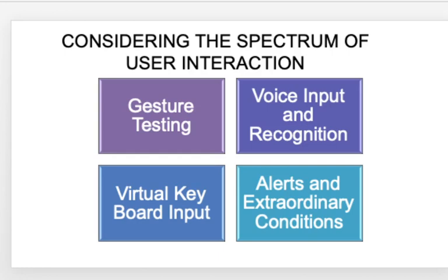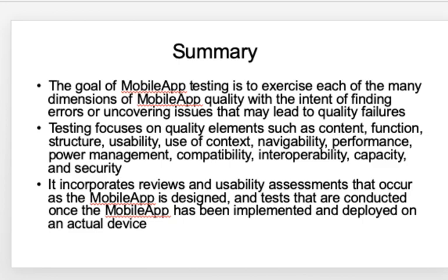Considering the spectrum of user interaction, mobile app testing also covers gesture testing, voice input and recognition, virtual keyboard input, and alerts and extraordinary conditions. In summary, the goal of mobile app testing is to exercise each dimension of mobile app quality, find the maximum number of errors with minimum effort, and focus on content, navigability, performance, compatibility, and interoperability. Testing incorporates reviews and usability assessments as the mobile app is designed, and tests are then conducted on the actual device.